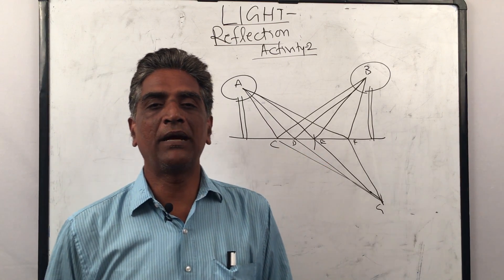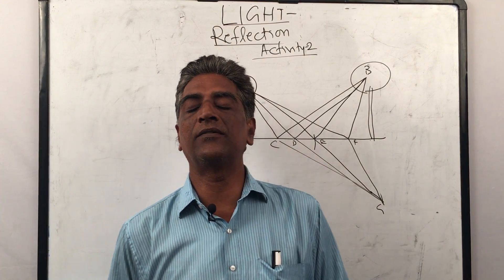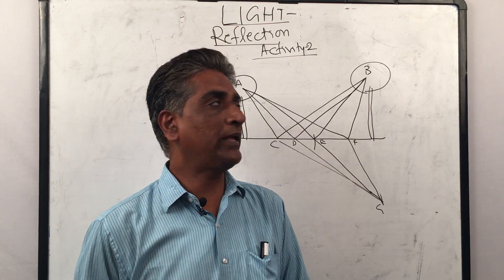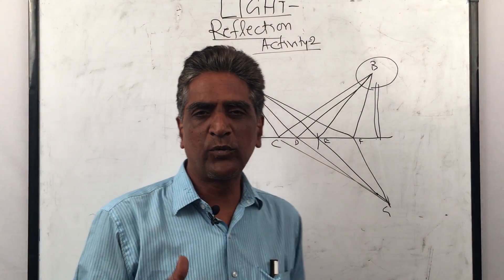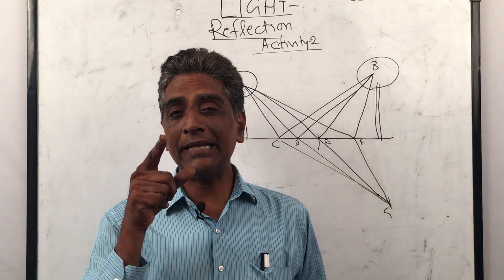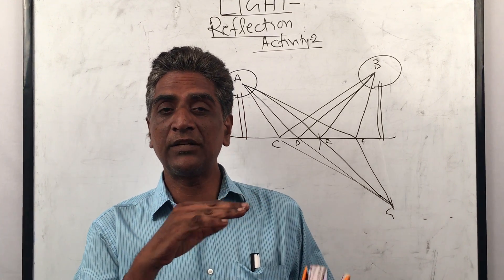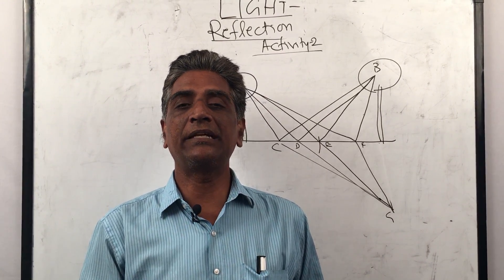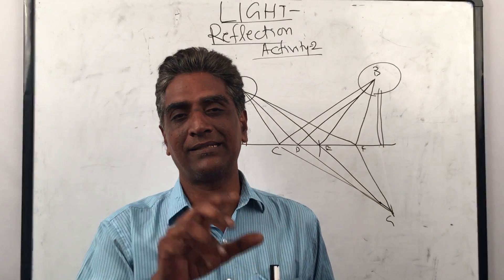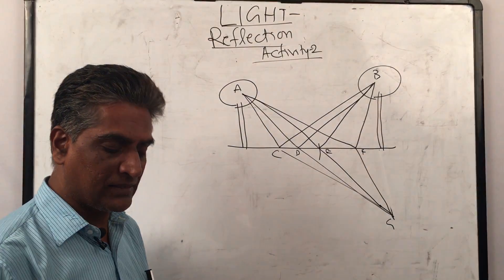Hello everybody, my name is Narendra Kumar and we are from Narendra Academy. Today our topic is Activity 2, in which we try to prove that light takes the least distance when it reflects from a surface. It travels that path in which it has to travel the least distance.